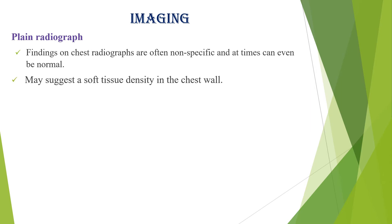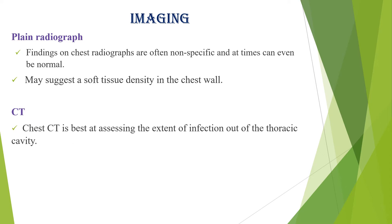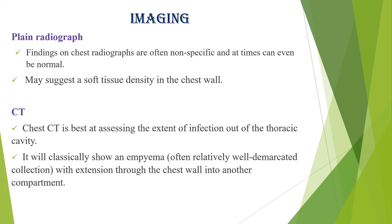Regarding imaging, chest X-rays are often nonspecific and at times can even be normal, but may suggest a soft tissue density in the chest wall. The most important imaging is CT scan. CT chest is best at assessing the extent of infection out of the thoracic cavity, and will classically show a well-demarcated empyrema collection with extensions through the chest wall into another compartment.